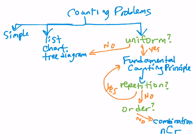But if yes, if we do want to consider order, then that's a permutation. And then within permutations we have at this point three different rules for those.